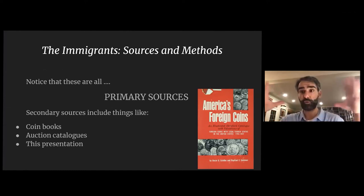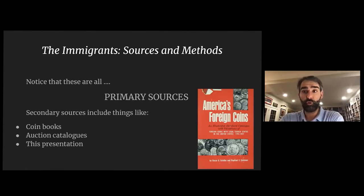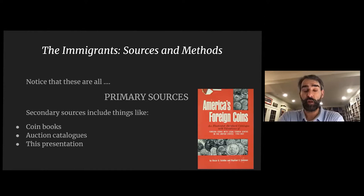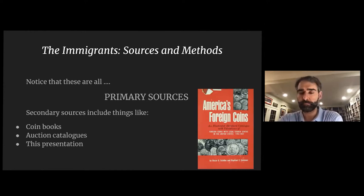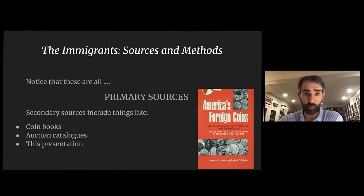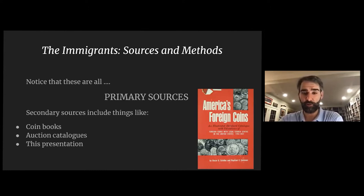All of these sources — physical and documentary — are primary sources: firsthand accounts from the era or the actual objects that were there. These are not secondary sources. An article in the Numismatist, this presentation, or an auction cataloger saying 'buy this coin because the colonists had one just like it' — those are secondary sources. We're talking about primary sources and how they inform this information.